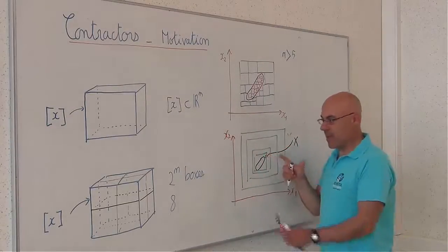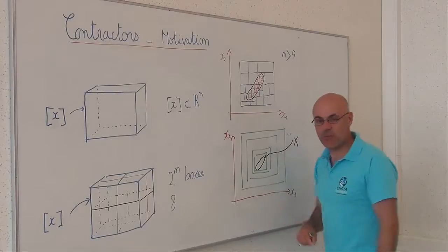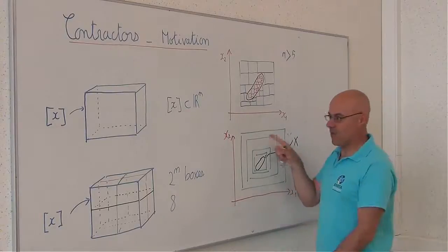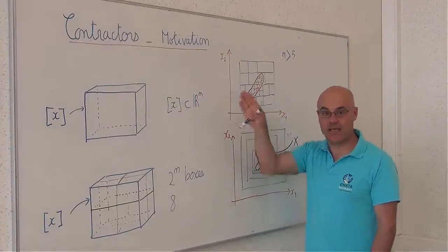It means that the contraction algorithm should be fast even when n is huge.